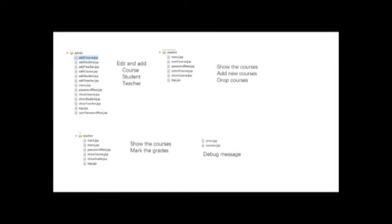The second part is the student. The system will show students the available courses, and students can choose or drop courses in the system. The third part is the teachers. The system will show the teacher's courses and the current grades. Teachers can also mark grades for students.